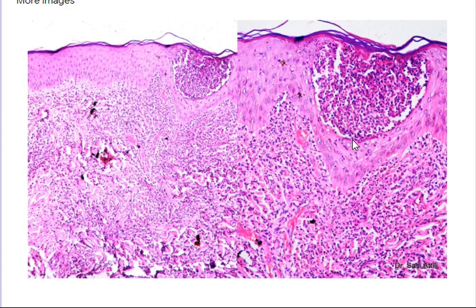I didn't purposefully ask about spongiosis or interface change. Often when the infiltrate is so dense it will attack anything in the vicinity. There is vacuolar interface change — the basement membrane is almost destroyed — but that is because there are so many neutrophils, and the acute cytotoxic cytokines released from neutrophils will destroy everything around. Hence you have neutrophils going into the epidermis, destroying the dermo-epidermal junction and collagen.